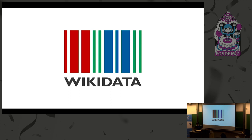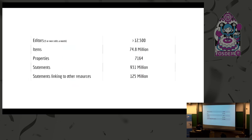Wikidata has become rather successful. After seven years of existing, we have around 12,500 people who edit at least five times a month. And we describe almost 75 million things in the world — like this building, Brussels, a famous actor, a movie, things like that.